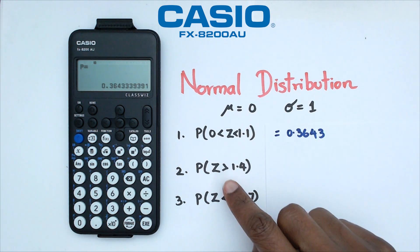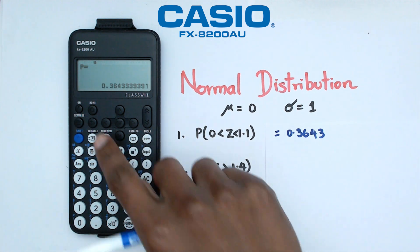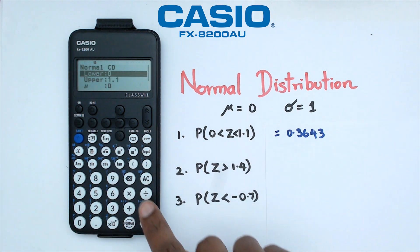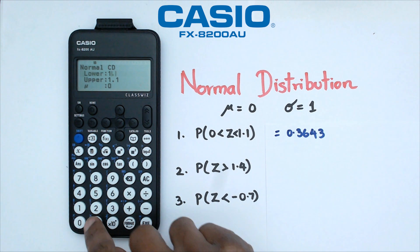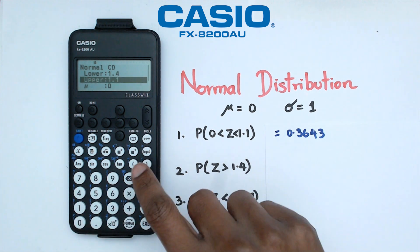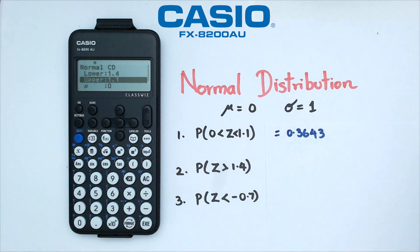Now looking at the second question there, the second question we've got for Z greater than 1.4. So what we're going to do is go back. Now our lower limit is going to be 1.4. But our upper limit is going to be a very large number.